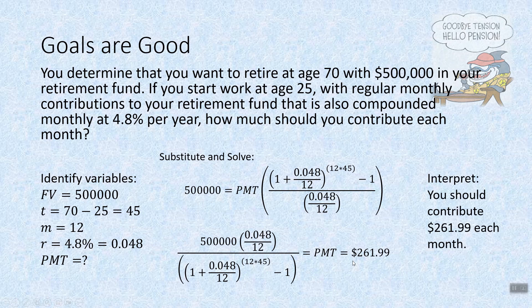Our interpretation: you should contribute $261.99 each month. That's not bad! Contributing $261.99 every month for 45 years comes to around $141,000 total deposited. Yet your account has $500,000 — thanks to the power of compounding interest. Note: this is not a compound interest formula, but interest is compounding within the annuity formula. Don't get those confused.